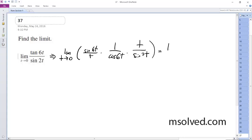So the limit as t approaches 0 of 1 over the cosine of 6t times the limit as t approaches 0 of 2t over sine of 2t.